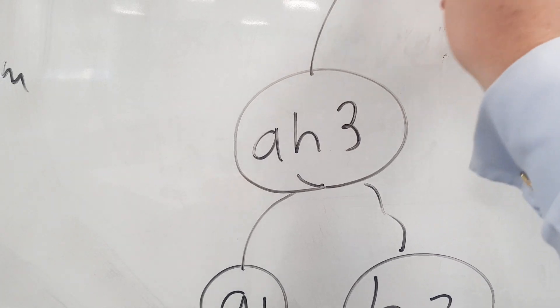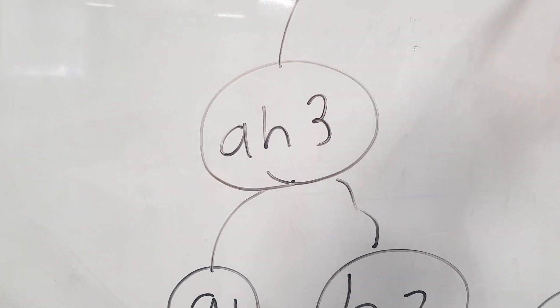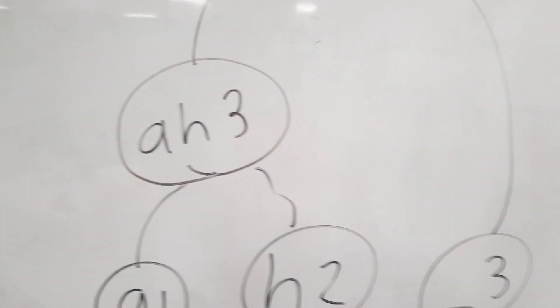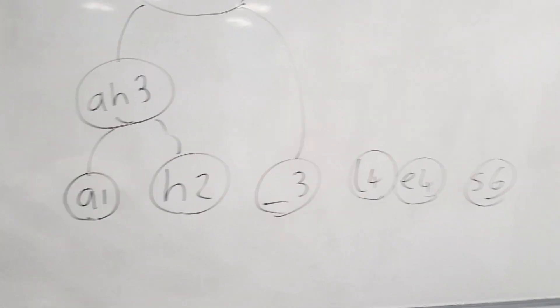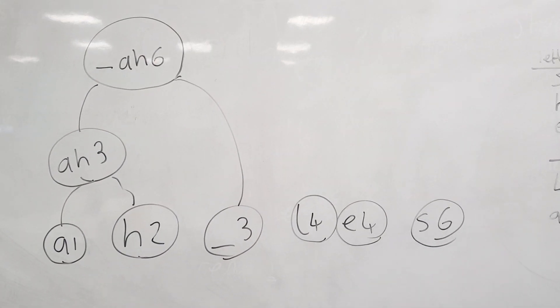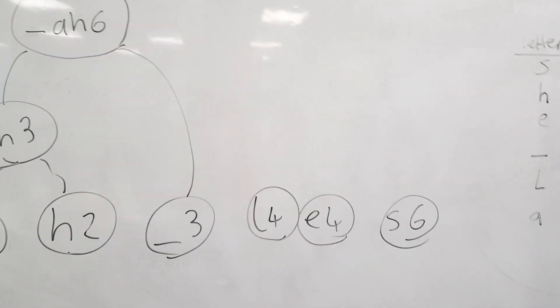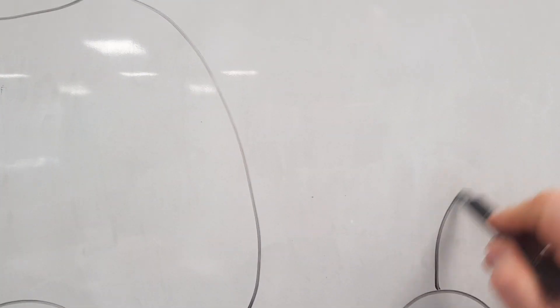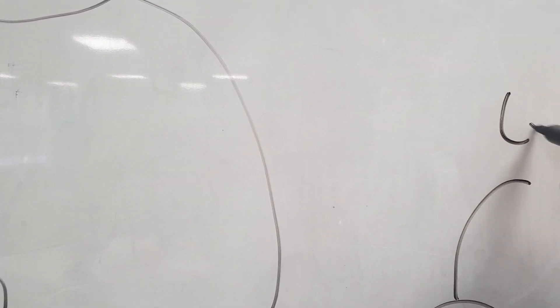And now our two lowest nodes are L four and E four, so we combine those to LE eight.